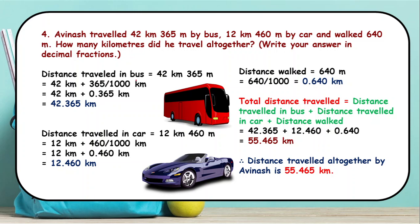The distance travelled by bus is given in two different units — 42 kilometers and 365 meters. To combine them, I will convert 365 meters into kilometers by dividing by 1000. That gives us 42 kilometers plus 0.365 kilometers, which equals 42.365 kilometers. In the same way we convert the distance travelled by car: 12 kilometers 460 meters becomes 12.460 kilometers.